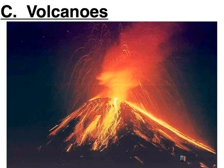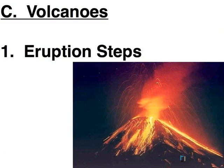Volcanoes are another of nature's disasters that people think of as being spectacular and yet frightening at the same time. So what happens to lead to a volcano erupting? For a volcano to occur, a number of things need to happen first before you get the spectacular eruption taking place.